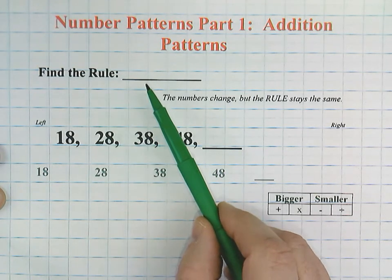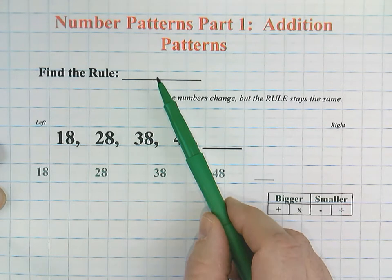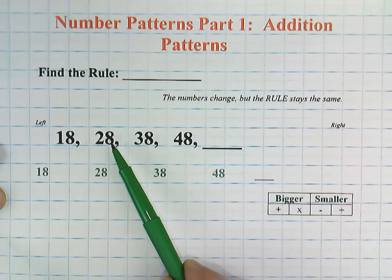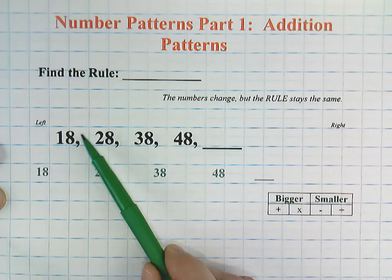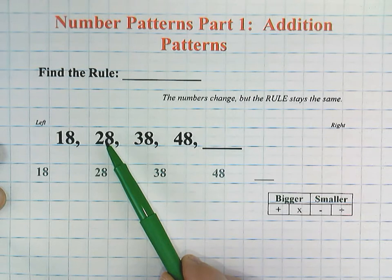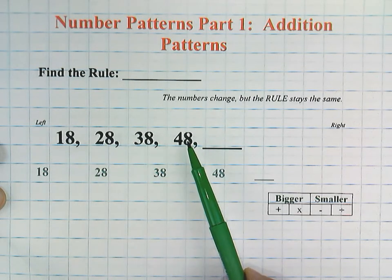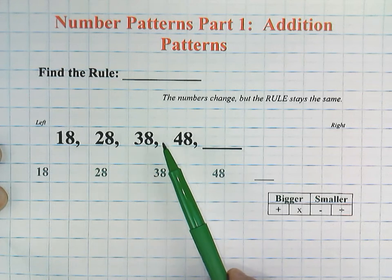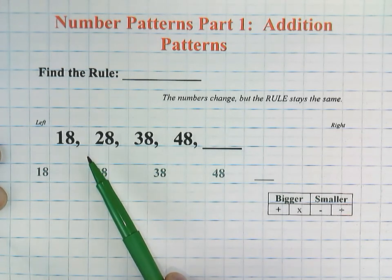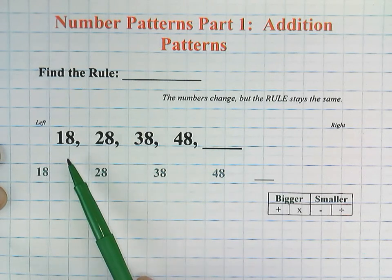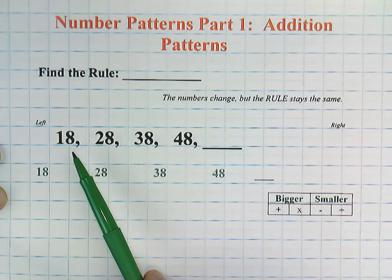Our job is to find the rule. By rule, we mean when you look at our first two numbers, 18 and 28, what is happening in between to change 18 into 28? The numbers change, but when we do patterns, the rule won't change. I'm going to stretch out these numbers so we can show our thinking.